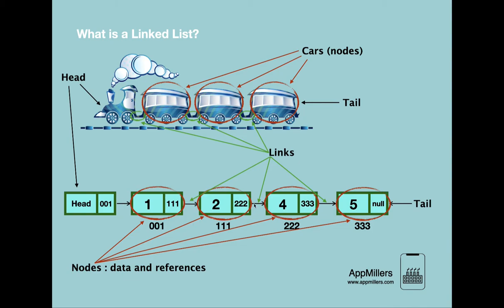Then we have nodes, which are the elements of the linked list. A node consists of two parts: the first part is the value of the node, and the second part is a reference to the next node, which creates a link between the current node and the next node.